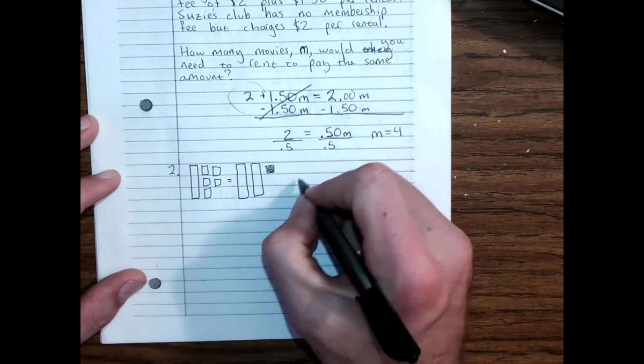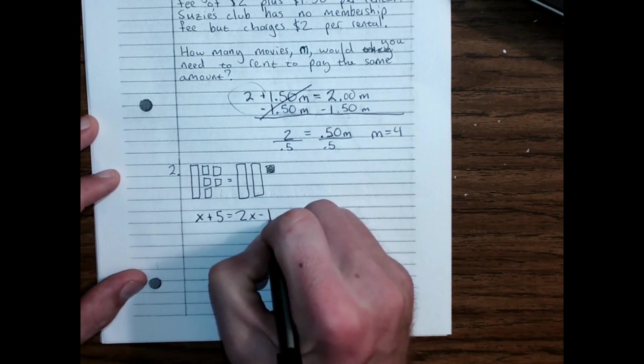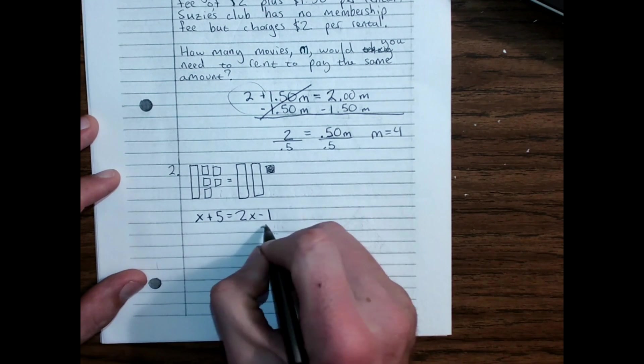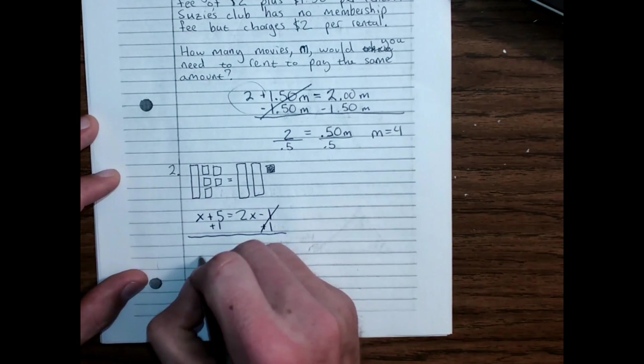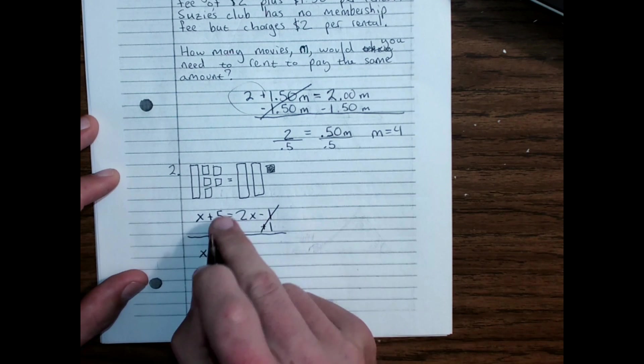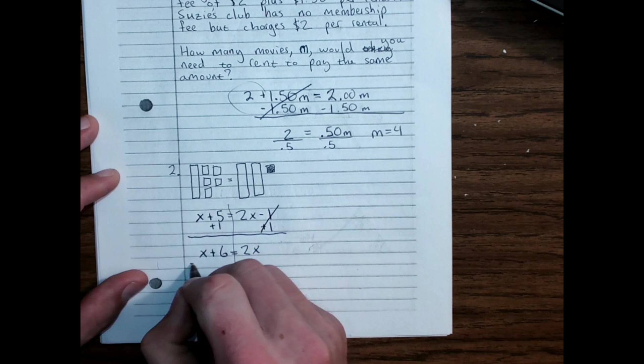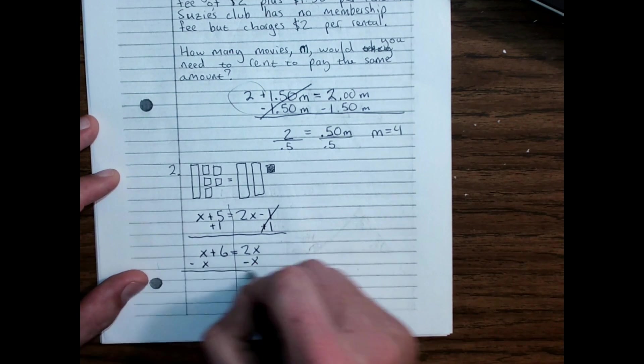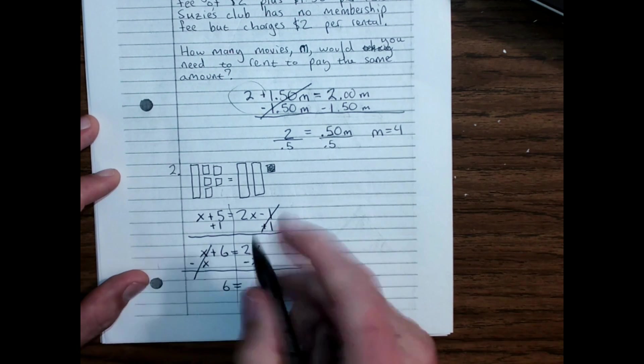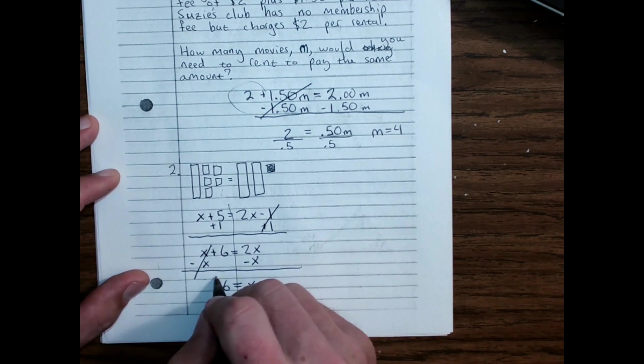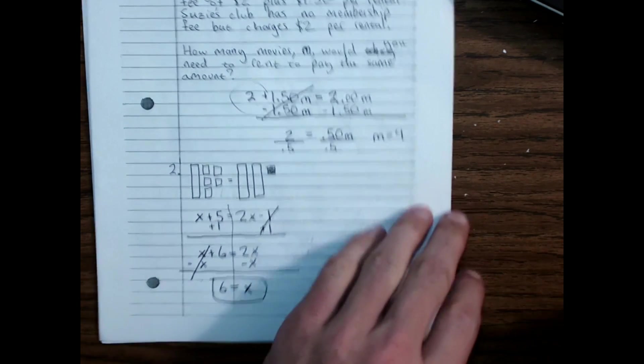Here, this should be written as X plus 5 equals 2X minus 1. Cancel a negative by adding a positive to both sides. 0 pair. X plus 6, because 5 plus 1 is 6, equals 2X. Cancel off the smaller of the two variable terms. 0 pair. 6 equals 2X boxes minus 1X box is just 1X. So X is equal to 6.